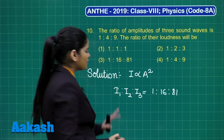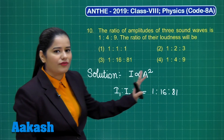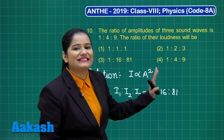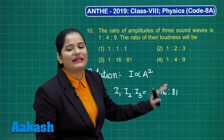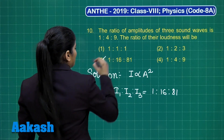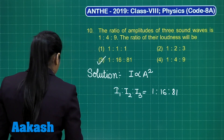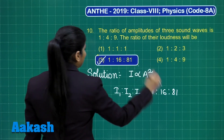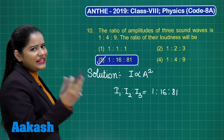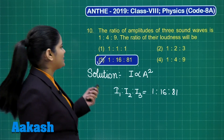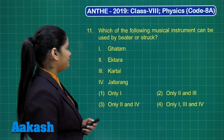So the ratio of loudness will be in the same ratio as the ratio of the intensity. The correct option is option number 3. I hope that's clear. Now let's proceed towards the discussion for the next question.